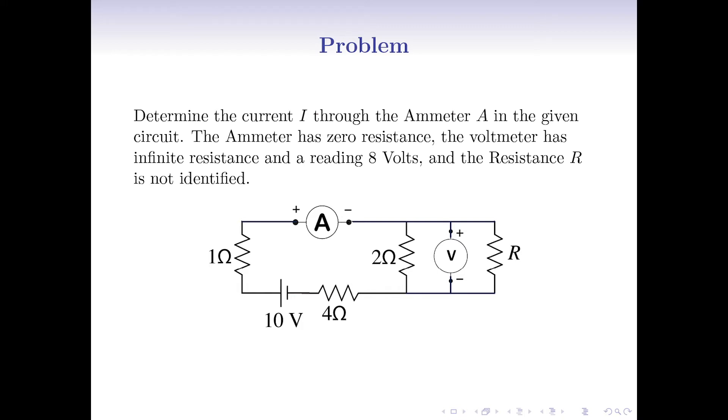Determine the current I through the ammeter A in the given circuit. The ammeter has zero resistance, the voltmeter has infinite resistance and a reading 8 volts, and the resistance R is not identified.